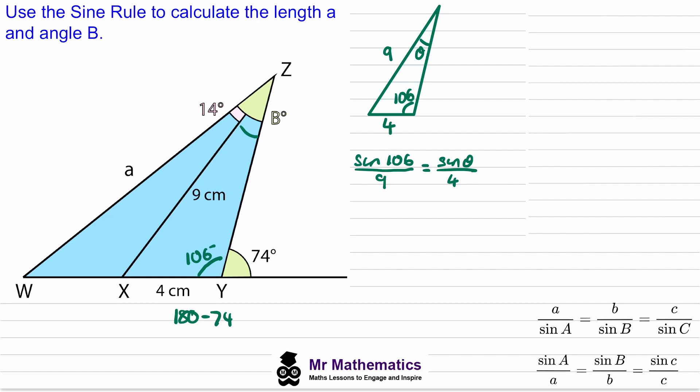And now to work out the theta we can multiply both sides by 4 and that will cancel off this division here. So we'll have 4 times the sine of 106 over 9 will equal the sine of theta and we can work this out on our calculators so the sine of theta will be 0.427 to three decimal places.